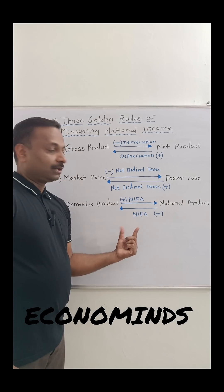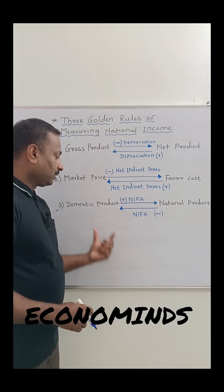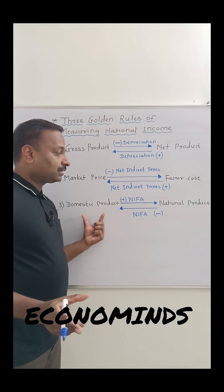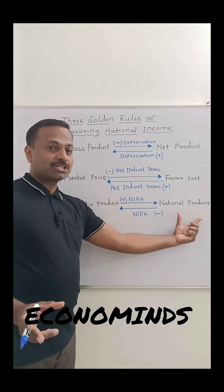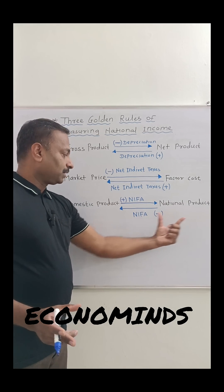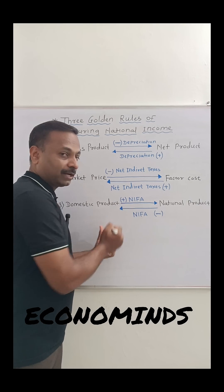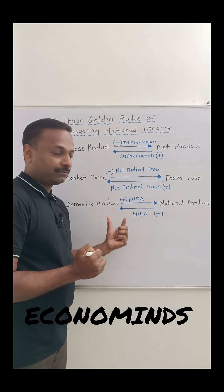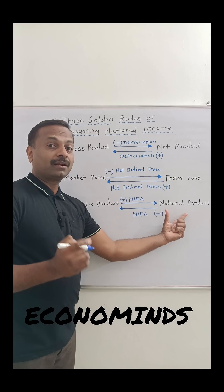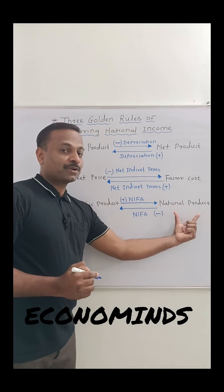The last adjustment is domestic product and national product. The difference between domestic product and national product is NFIA — Net Factor Income from Abroad. When domestic product is given and we are going to calculate national product, the formula is: domestic product plus NFIA equals national product.